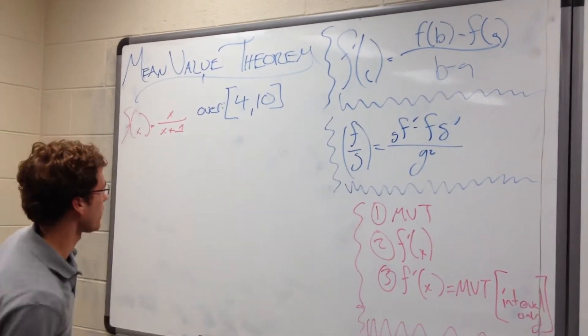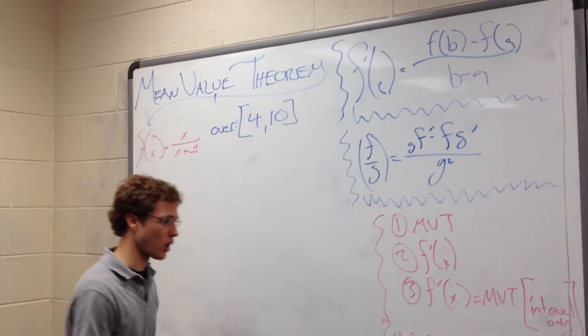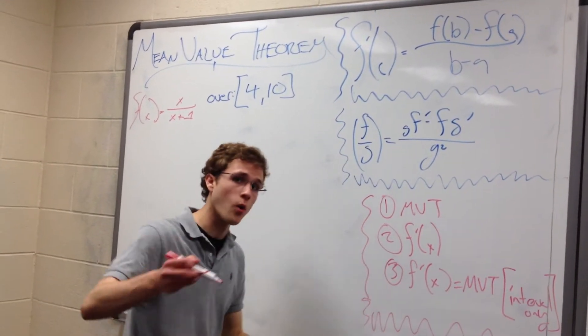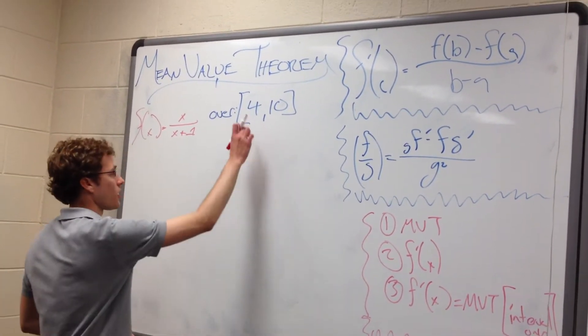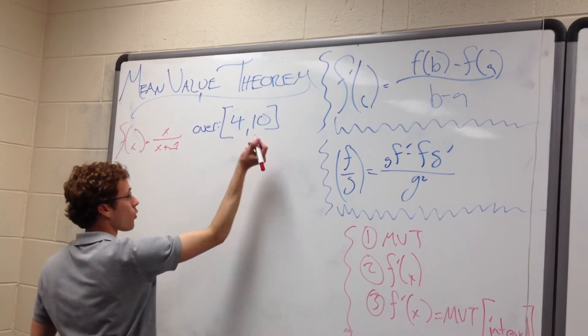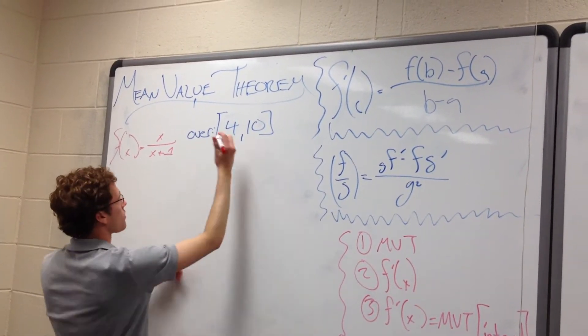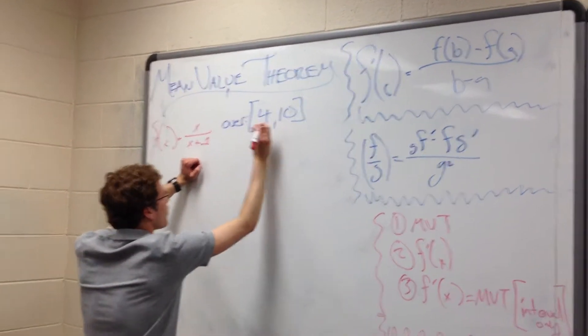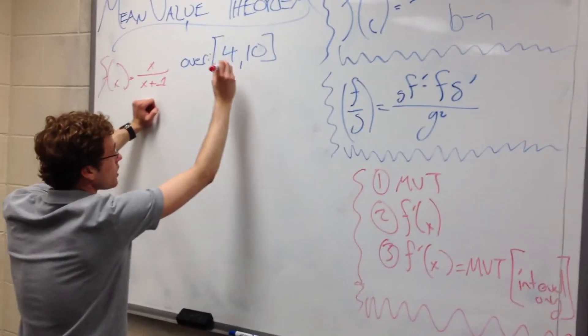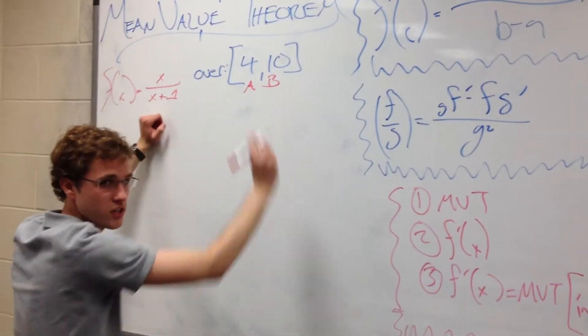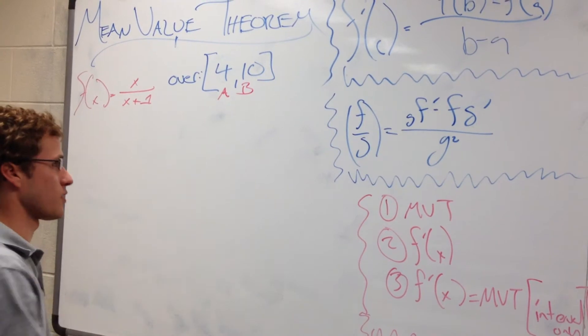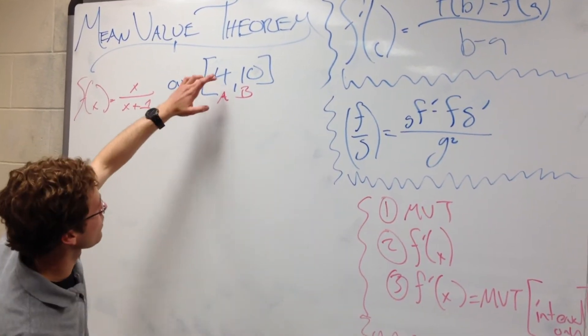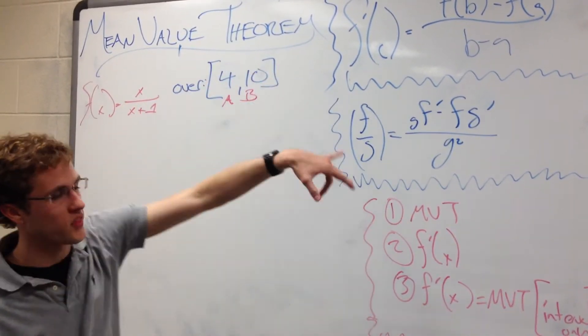f prime of c equals f of b minus f of a over b minus a. Now, okay, what's our b and what's our a? Well, to find that out, you're always just going to want to go and look at your interval. And this is just your interval here for 10. Not ordered pair, sorry. Wrong vocabulary there. Just your interval. The leftmost number is going to be your a, and the one on the right, that's going to be your b. So that's all you're going to be plugging in. Every time you see b, we're going to be evaluating this number within this function or within its prime.